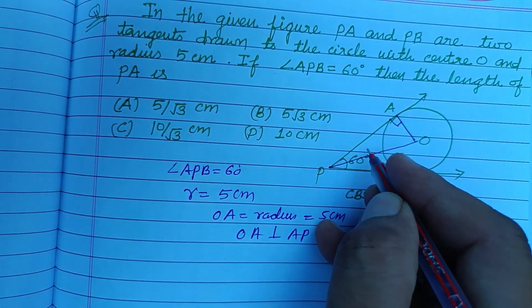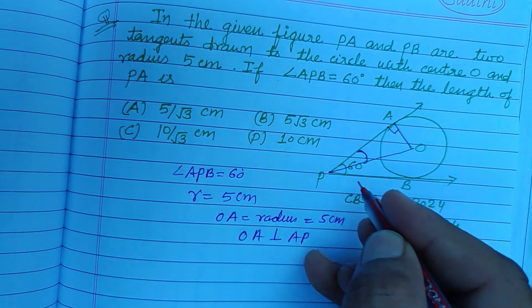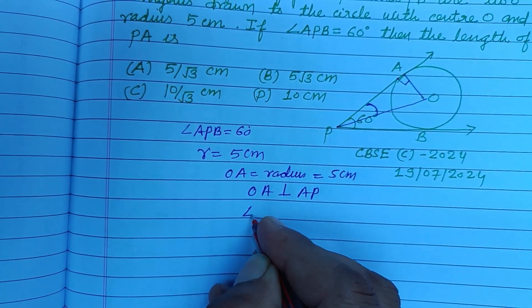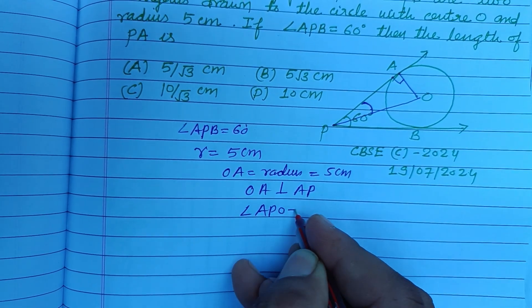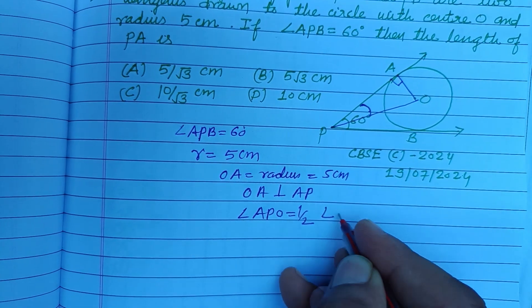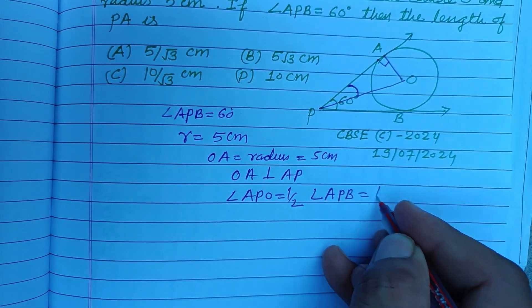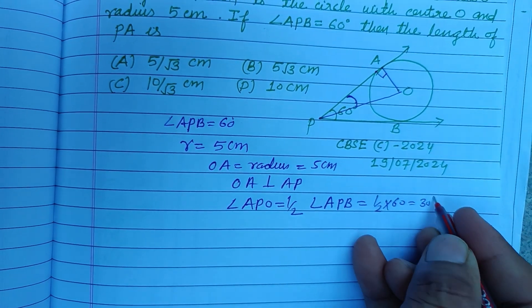Now this angle becomes half of the angle APB. Angle APO is half of angle APB, so half of 60, that is 30 degrees.